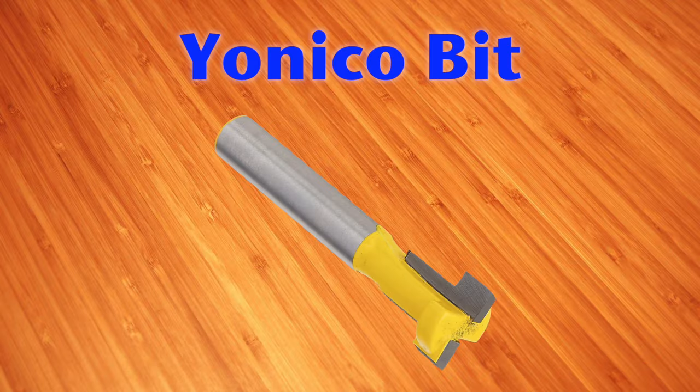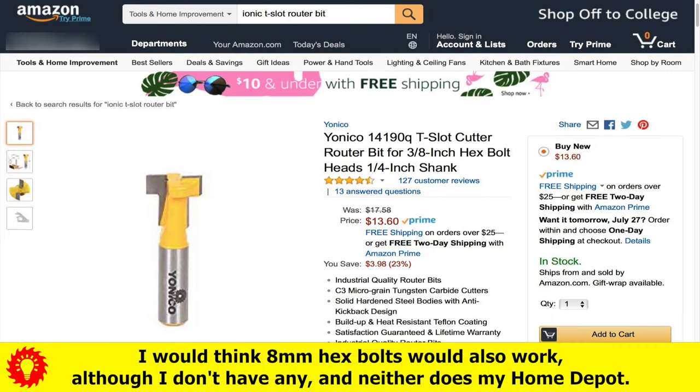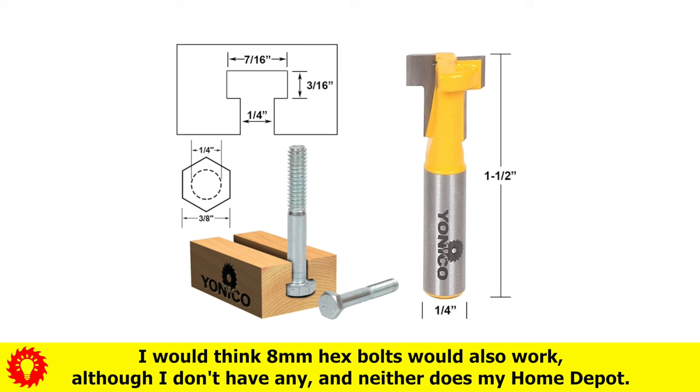Let's start with this Yanico router bit. It cuts a slot for use with quarter-inch hex bolts. It's pretty cheap, so if I ever need to buy a new one, you won't break the bank. It's designed to cut the T-slot in one pass.